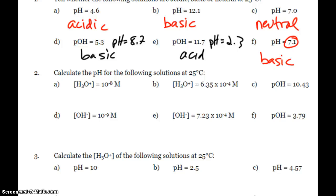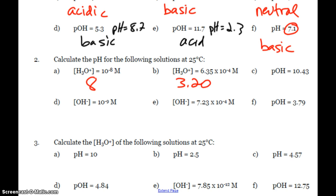So first up, if I take the negative log of 10 to the negative 8, my pH is just 8. When I take the negative log of 6.35 times 10 to the negative 4, I get 3.20. Again, if I'm given pOH, I just subtract from 14. So my pH is 3.57 here. It's 10.21 here.